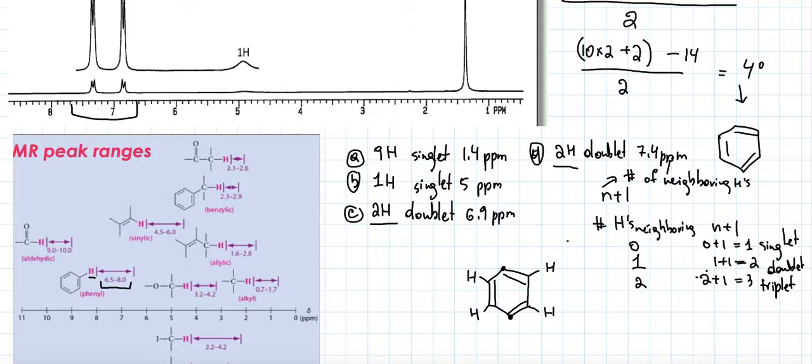Okay, nine hydrogens singlet. Singlet means I have zero neighboring hydrogens. How could I have zero neighboring hydrogens and have so many hydrogens with no neighboring hydrogens next to them? Well, one possibility is a tert-butyl group.